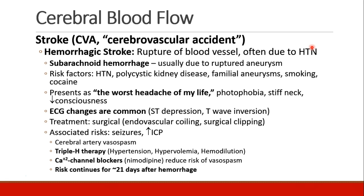A hemorrhagic stroke occurs when a blood vessel ruptures, often due to chronic stress on cerebral vasculature in hypertensive patients. A subarachnoid hemorrhage usually occurs due to a ruptured aneurysm. Risk factors include hypertension, polycystic kidney disease, familial aneurysms, smoking, and cocaine use. Patients who make it to the hospital often describe the worst headache of their life, as well as photophobia, stiff neck, and decreased consciousness. EKG changes are commonly seen in intracranial bleeds, including ST depression or T wave inversion.